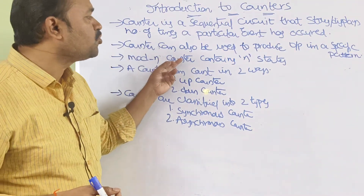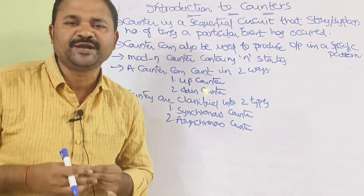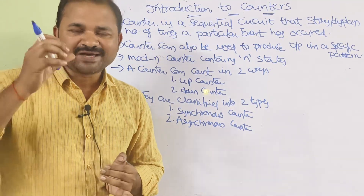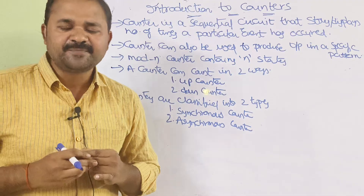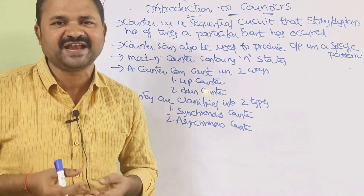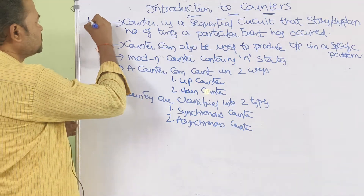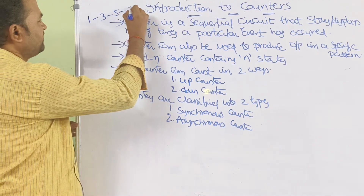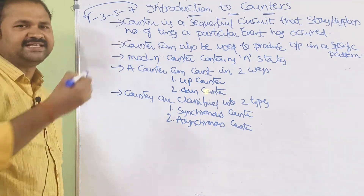A counter can also be useful to produce the output in a specific pattern. By using counters, we can produce the output in any pattern we like. For example, a pattern like 1, 3, 5, 7 — we can display the output in this pattern.